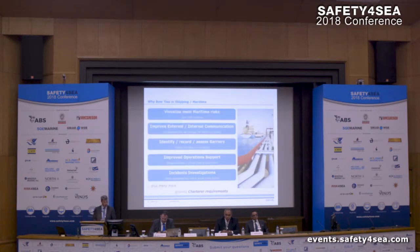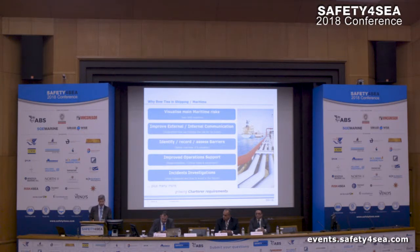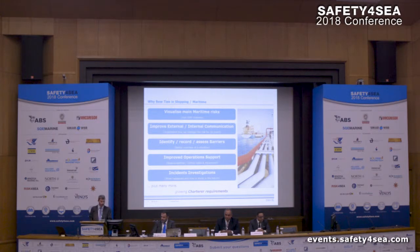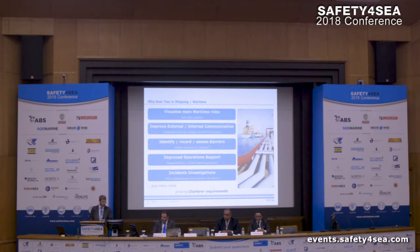Bow ties can communicate improvements and support learning across the entire organization and its operators. Especially for shipping, bow ties can be very successful in visualizing main maritime risks, leading to lean safety management systems. Having a lean and concise picture, they can be used to improve communication both internally in a company and with external stakeholders and regulating authorities. They provide a much better overview by identifying threats, consequences, barriers, correct identification of hazards and top events — leading to improved operations — and they can also be applied in incident investigations.